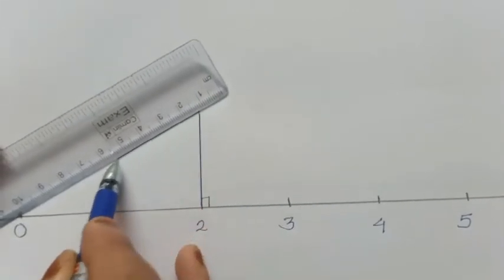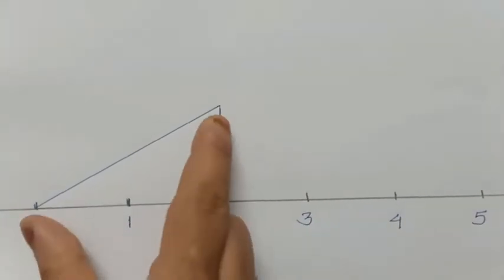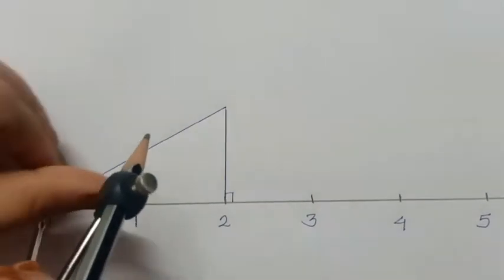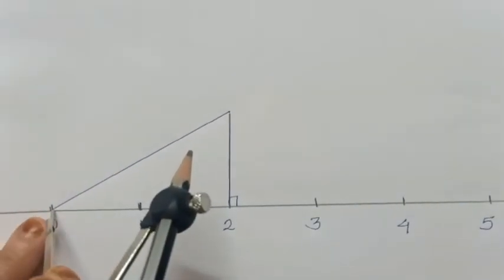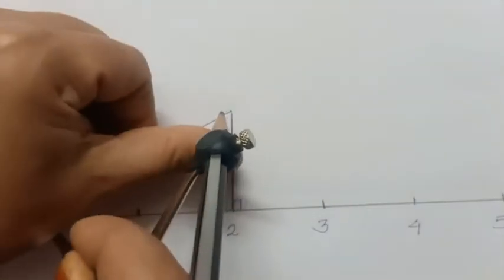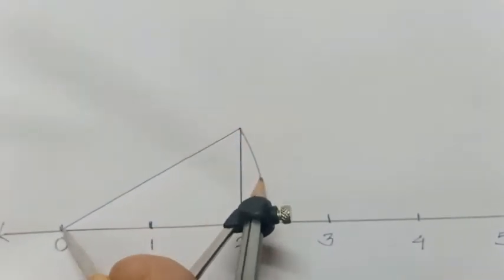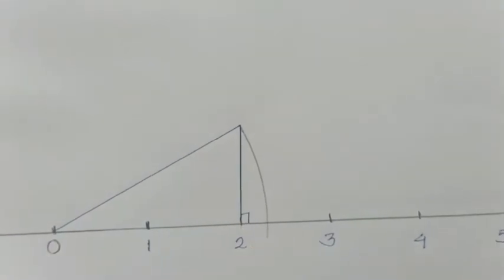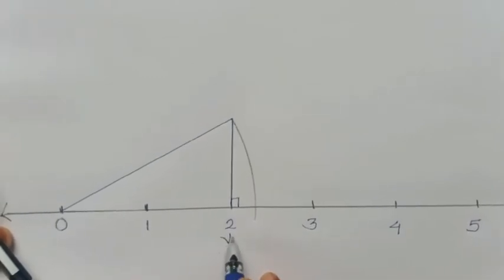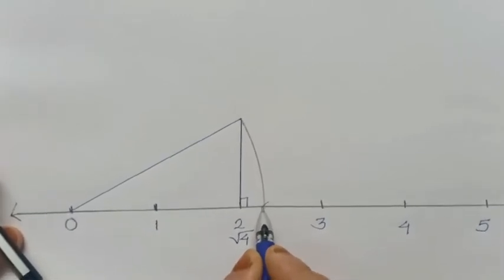Now connect this perpendicular to the 0. Then afterward, we take the span of the distance between the two arms of the compass — from 0 to this perpendicular — as the radius, with 0 as the center. Now draw one arc to the right side of this perpendicular. So 2 equals root 4, and the next number lying after root 4 is root 5. That point is our root 5.